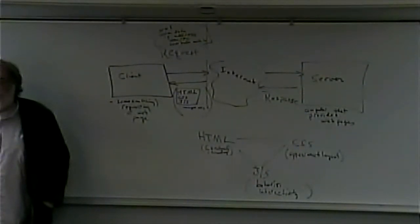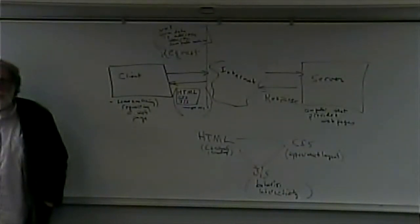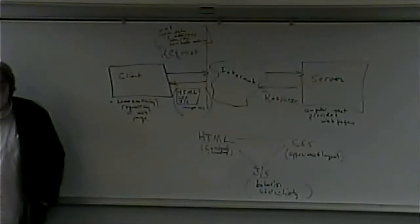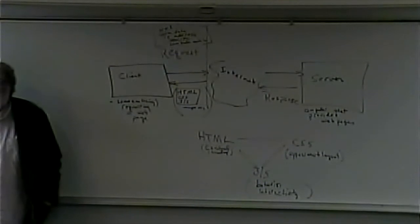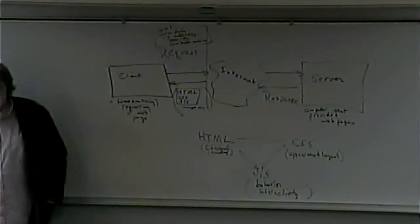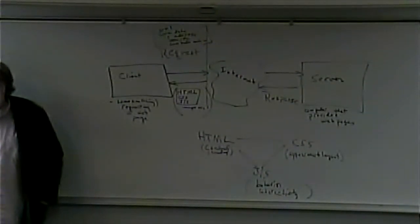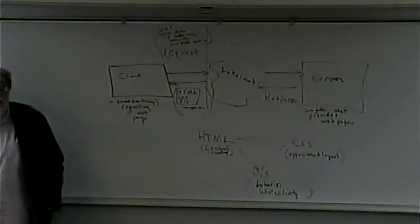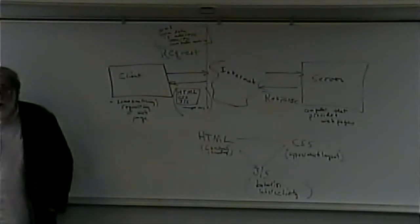How the server comes up with the web page is another question. If you go to McDonald's and order a Big Mac, the server goes and finds a Big Mac already sitting in the bin and gives it to you. There's a whole bunch of Big Macs prepared in advance, waiting for someone to order them. The server just delivers something that was made in advance. Web pages can be static — meaning they're prepared in advance — or dynamic, meaning they're created on the fly.